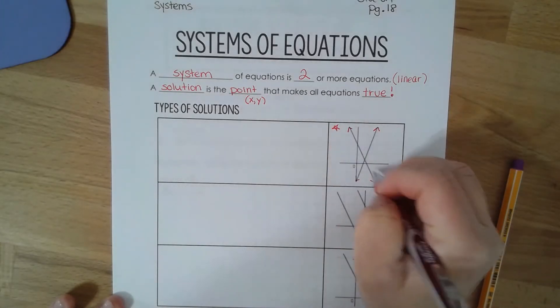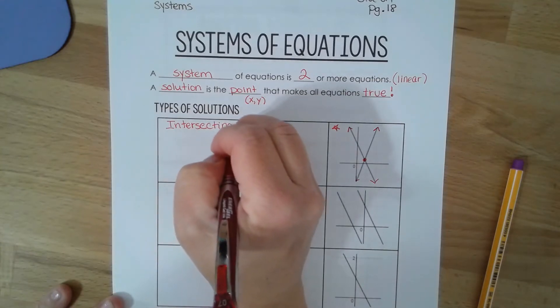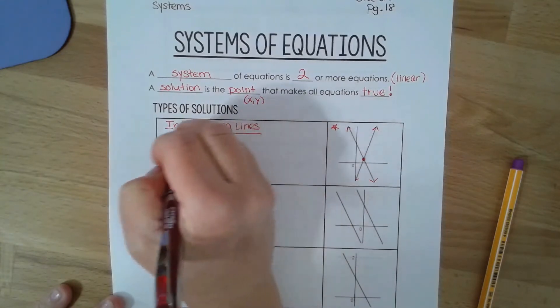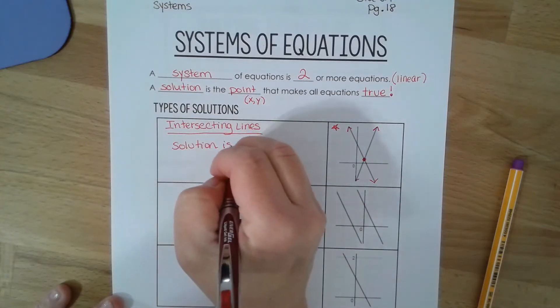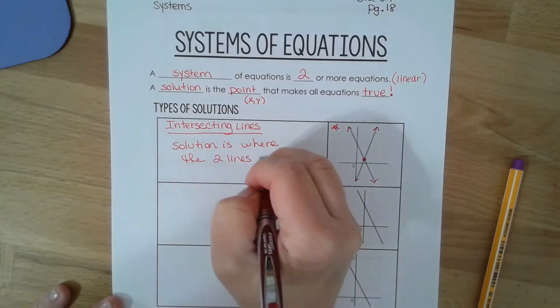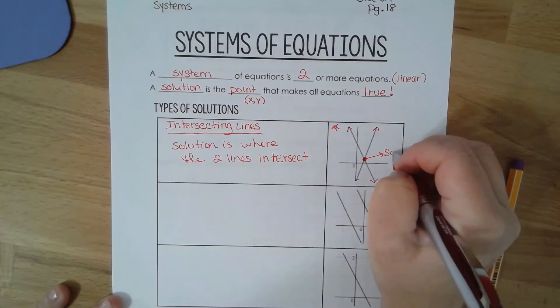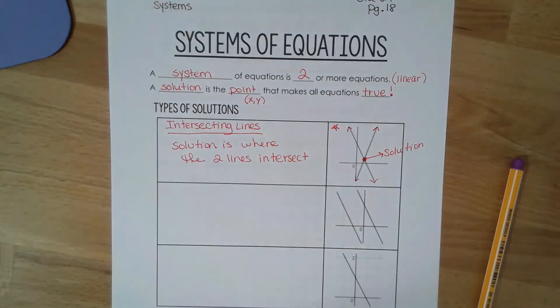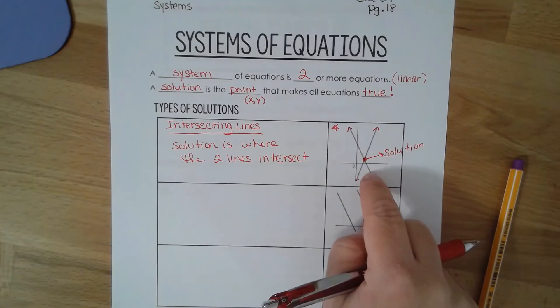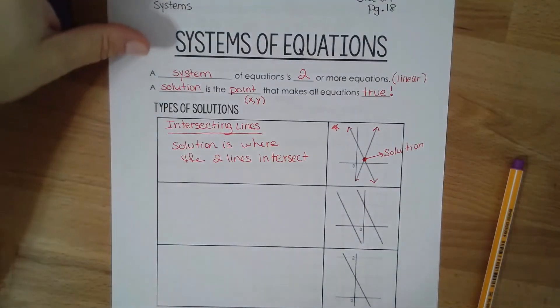Which is when the two lines intersect. So this right here is my solution, it's where the two lines intersect and again I'm going to kind of show you what that means in a second. We're only going to focus on two lines that intersect. Later on next week we'll talk about what happens when we get different lines that don't intersect.